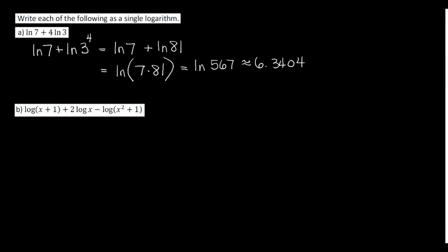For the next example, we can use that trick about whenever we have a logarithm that's positive, its argument will go on top. And when we have a logarithm that's negative, that argument will go on the bottom. But first, we're going to take care of any powers. So the first part, log of x plus 1, will stay the same. But the 2 in front of the log x will become the squared for the x on the inside. Everything else so far is staying the same.